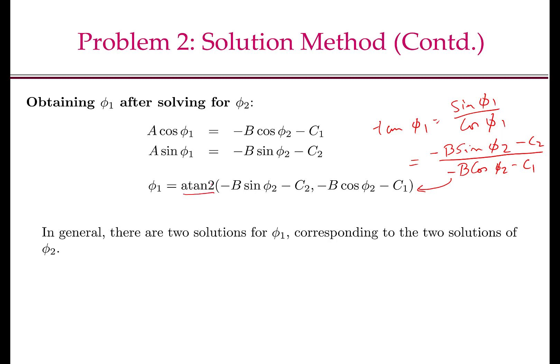Since there are two solutions for phi 2, there will be two solutions for phi 1. For each solution of phi 2, there will be a corresponding phi 1.